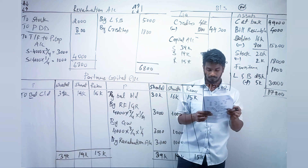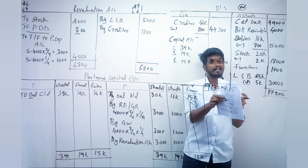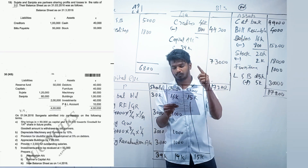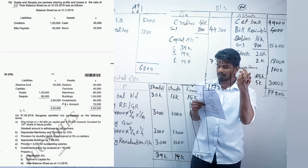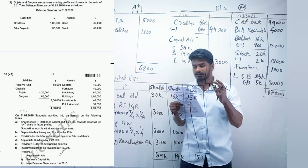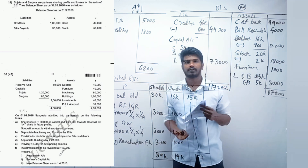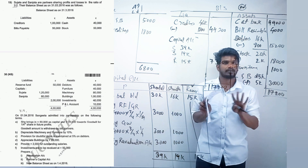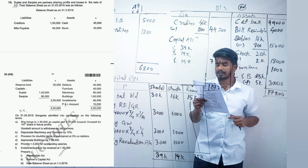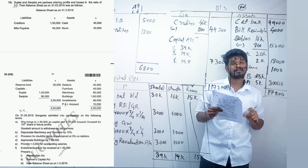To solve the revaluation account we need to read the adjustments. The first point: the admitted partner brings 60,000 as capital and 20,000 as goodwill — this is not related to the revaluation account; we will record it in the partners capital account. Leave that. The second point B: depreciate machinery and furniture by 10%.